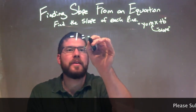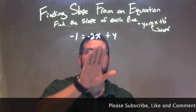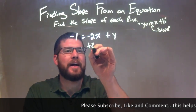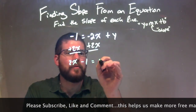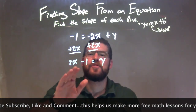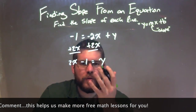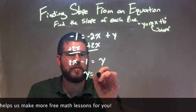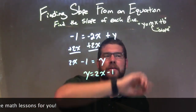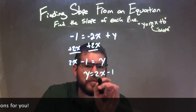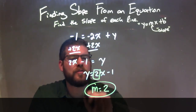Negative 1 equals negative 2x plus y. I need to isolate y, so I add 2x to both sides to get y by itself. That leaves me with 2x minus 1 equals positive y. This is really our slope-intercept form. Y is by itself. You can see our slope is 2. If we rearrange to have y first: y equals 2x minus 1. That's in slope-intercept form. Our m value is 2 — the coefficient in front of x. So m equals 2. That is our final answer, our final slope of 2.